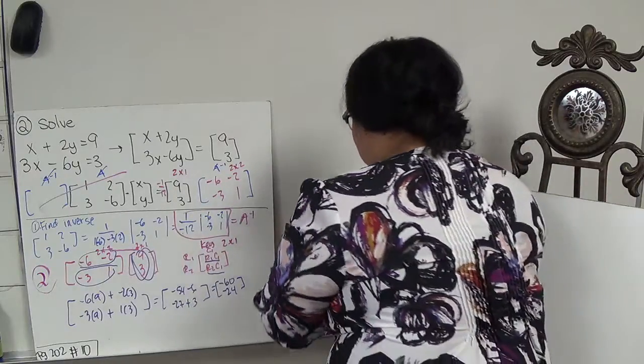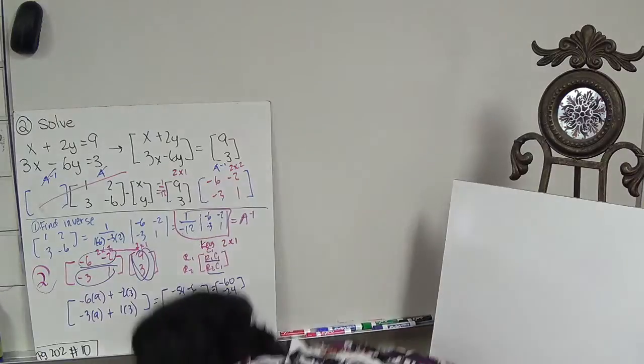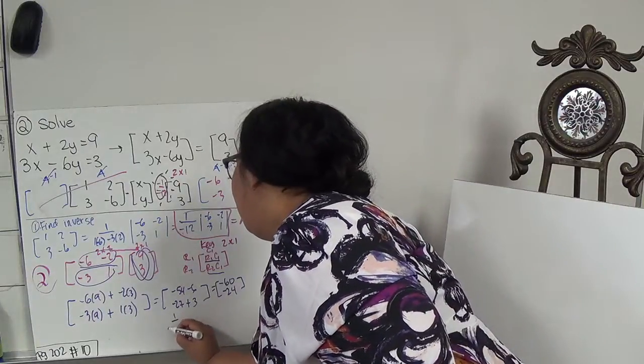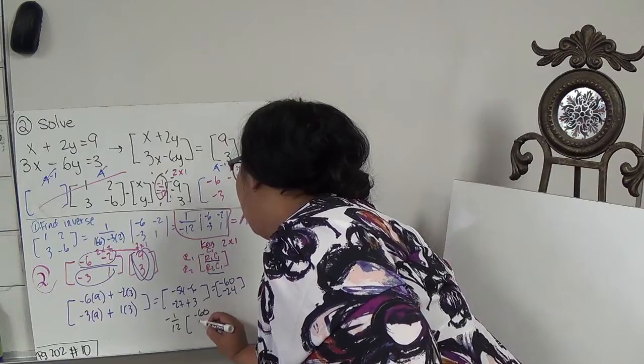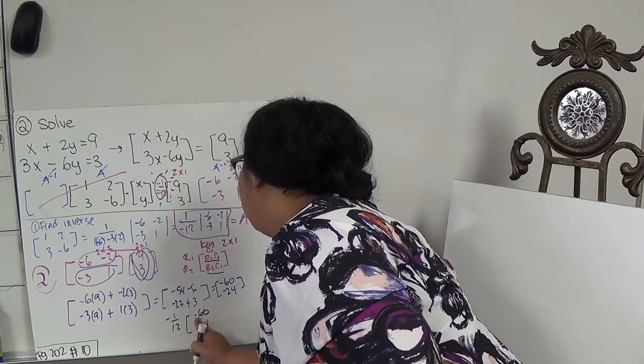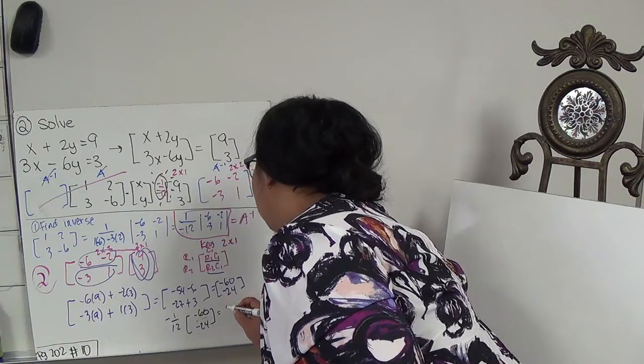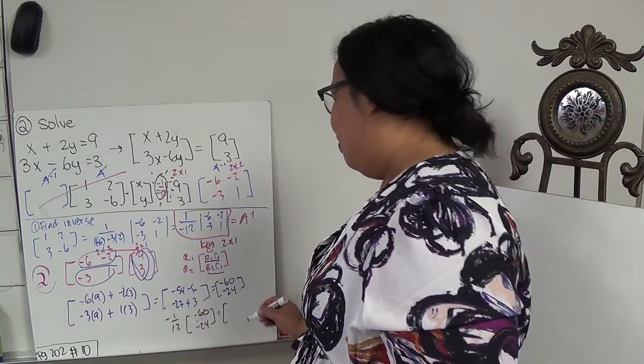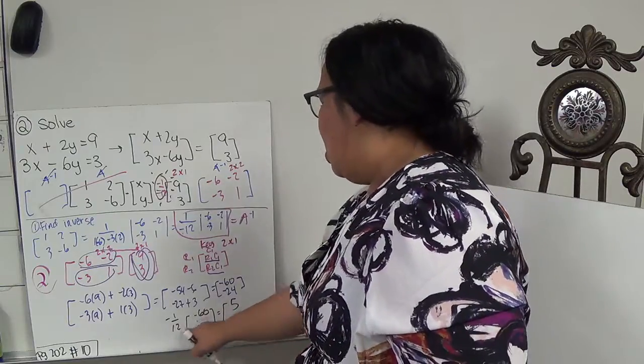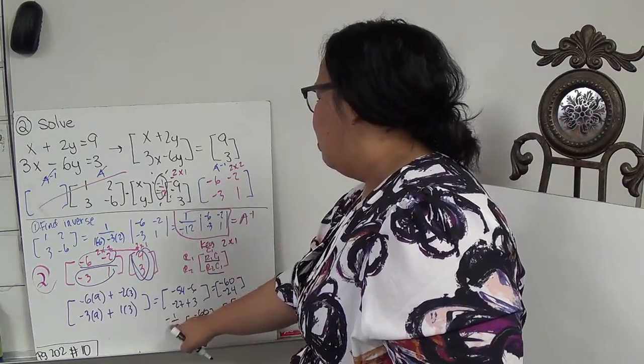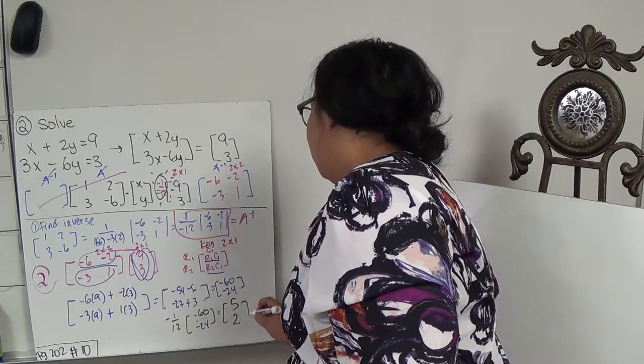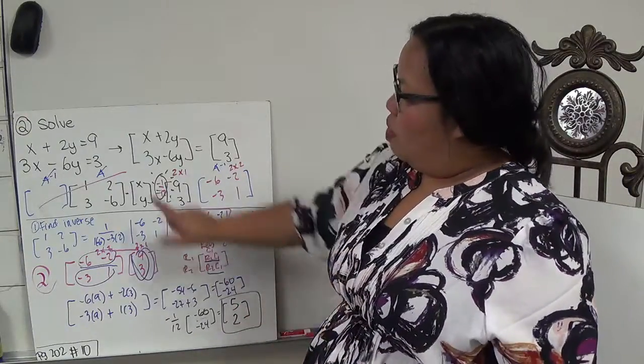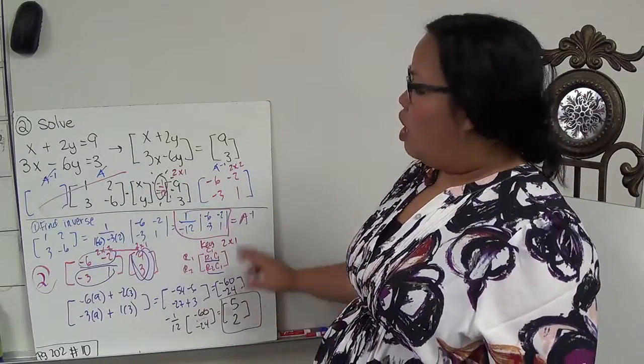So, this is not my answer yet. I still, still don't forget this negative 1 over 12. Don't forget that. So, I still have to do negative 1 over 12. But, now, these are divisible by 12. So, this is negative 60 times negative 1 over 12 would give me a positive 5. And then, negative 24 times negative 1 over 12 would give me a positive 2. So, my answer is x is 5 and y is 2. So, if I plug x in there for 5 and y for 2, I should get my answer.